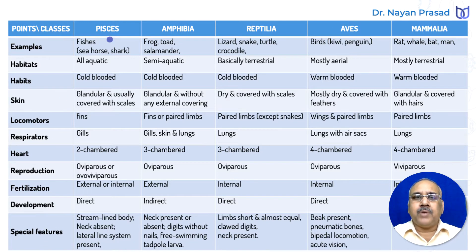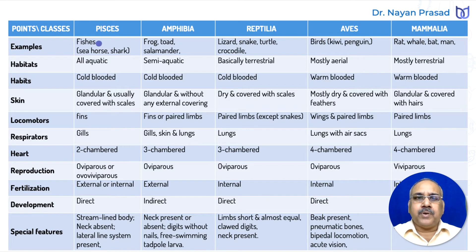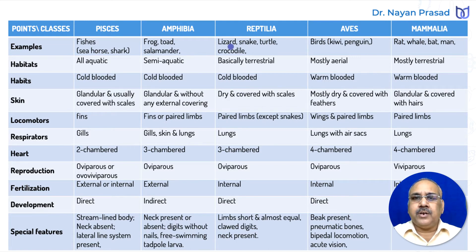Let us start from superclass Pisces, the group of fishes. Examples include all different true fishes, such as seahorse and shark. In Amphibia, we see frog, toad, salamander, and Ichthyophis. Reptilia includes lizard, snakes, turtle, tortoise, and crocodiles.